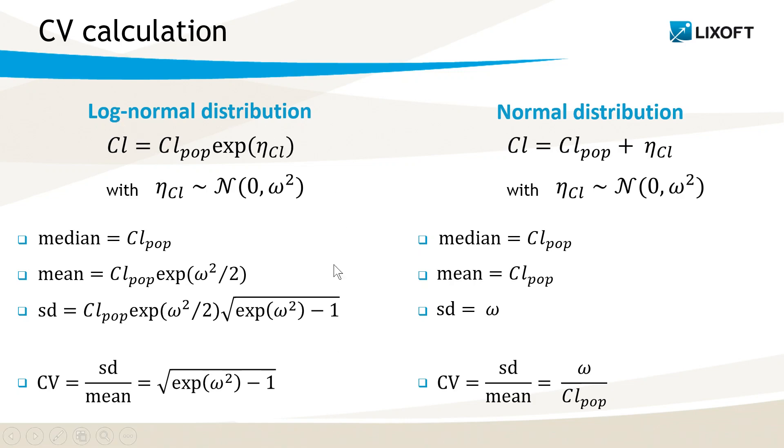Let's focus on the log-normal distribution case as it is the most common. We can see in this formula that it only depends on the omega parameter, the standard deviation of the random effects, which is calculated by Monolix. So to calculate CV, I just have to apply this formula to each log-normally distributed parameter using the omega values displayed in the Monolix result tab.